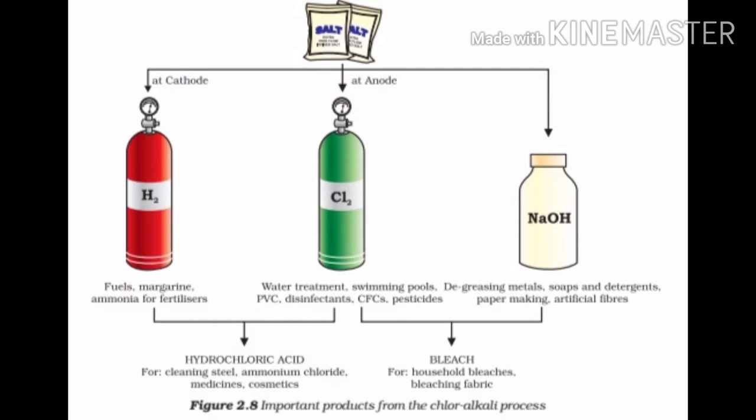Hydrogen is used as fuel, to make margarine or vegetable butter, and for making ammonia for fertilizers. Chlorine is used for water treatment in swimming pools, for making PVC, disinfectants, chlorofluorocarbons, and pesticides. Sodium hydroxide is used for degreasing metals, soaps and detergents, paper making, and artificial fibers. Hydrogen and chlorine together are used to make hydrochloric acid, which is used for cleaning steel, making ammonium chloride, and in medicines and cosmetics.